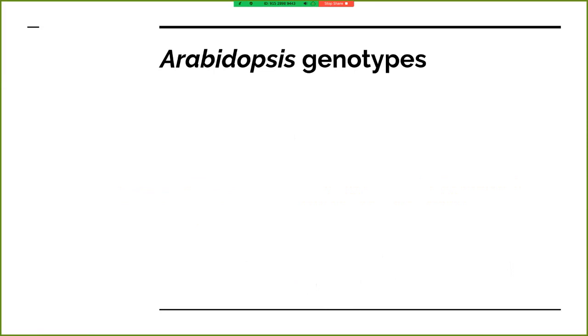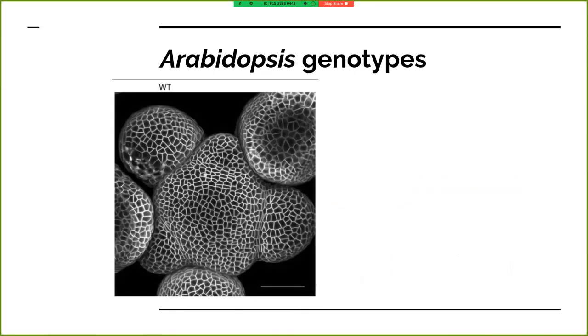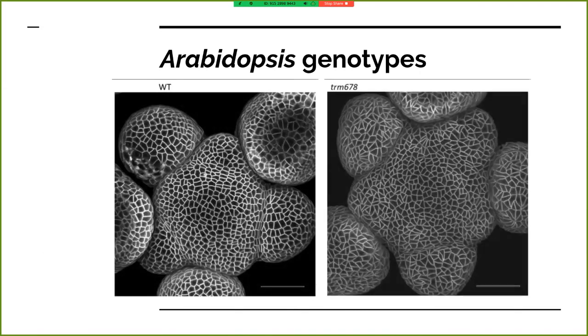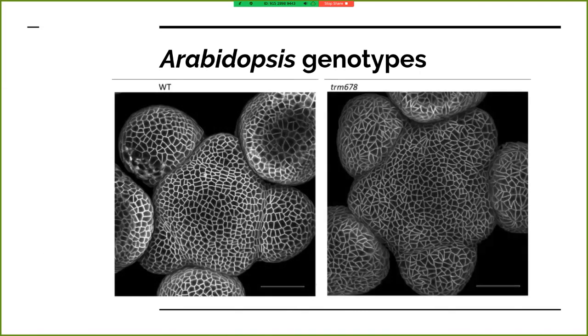For my dataset, I have a bunch of confocal microscope images from wild type and mutant arabidopsis. The mutants have been modified in a way that makes their cell division different.